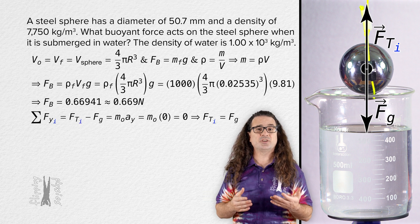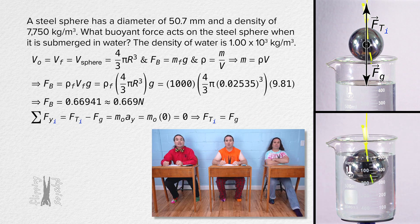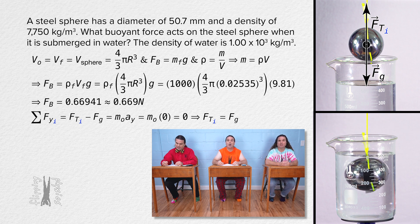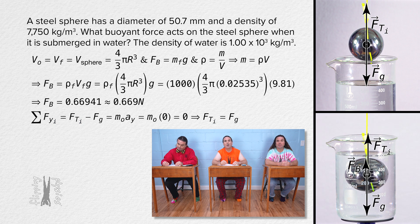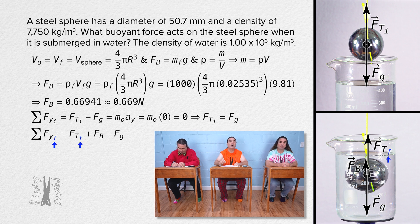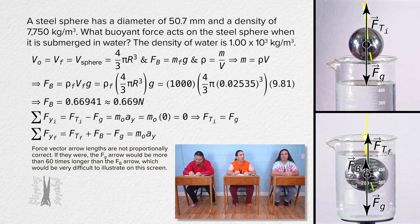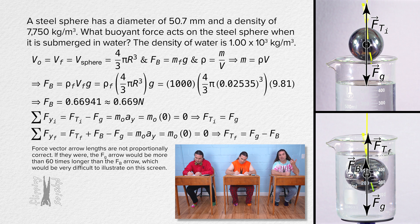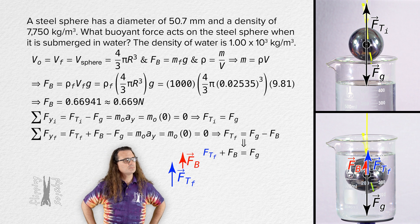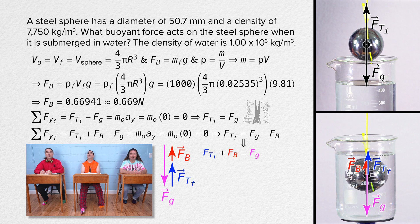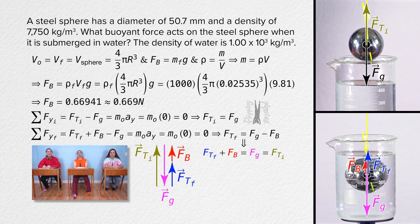Bo, please do what Bobby and I just did for after I lower the sphere into the water. After you lower the sphere into the water, the only change in the forces in the free body diagram is that there is now a buoyant force acting up on the sphere. That means the net force in the y direction equals the force of tension final plus the buoyant force minus the force of gravity equals the mass of the object times acceleration in the y direction, which equals 0. And now the force of tension final equals the force of gravity minus the buoyant force. We need to decrease the length of the force of tension in the free body diagram — the force of tension final is less than the force of tension initial.